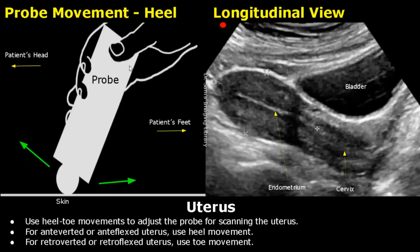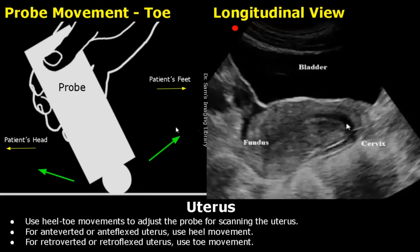Heel-toe movements of the probe can be performed to align the probe with the uterus. This type of angling towards the patient's head is heel movement. For an anteverted or anteflexed uterus, you can use the heel movement to align the probe parallel to the uterus. For a retroverted or retroflexed uterus, use toe movement — the probe is angled towards the patient's feet.